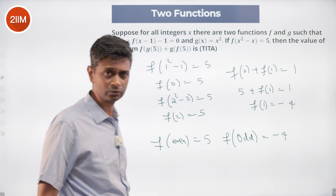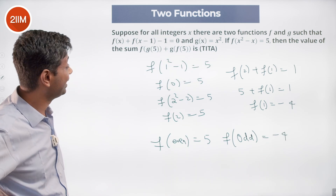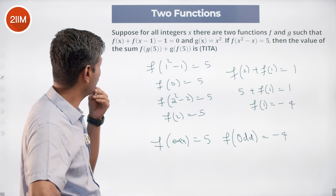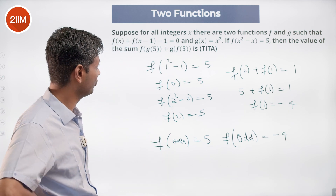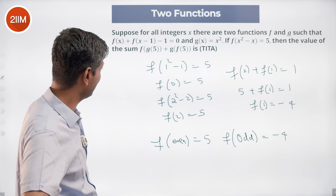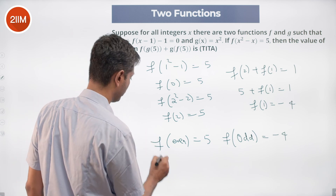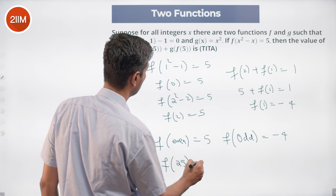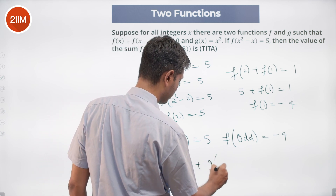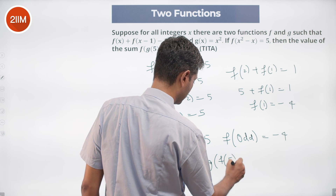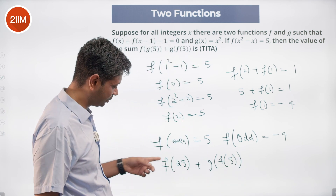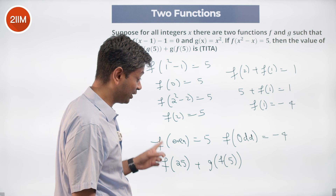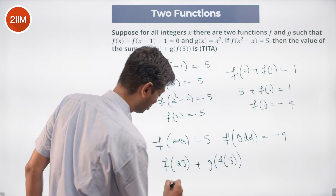Now we need to find f(g(5)) + g(f(5)). Since g(x) = x², g(5) = 25, so f(g(5)) = f(25). Since 25 is an odd number, f(25) = -4.